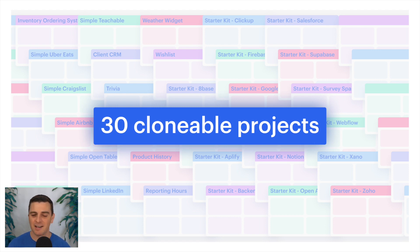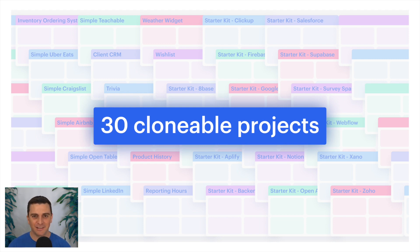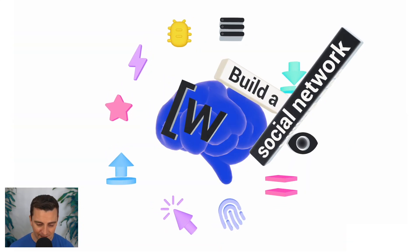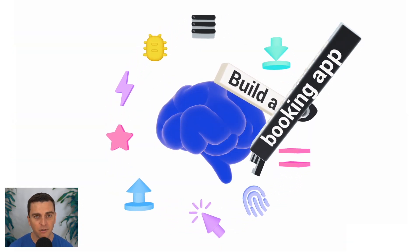You can duplicate any of these projects and start using Wizd immediately. We'll build a simple Uber Eats, a simple Craigslist, a simple Airbnb, a simple OpenTable, simple LinkedIn, simple Teachable, our own custom client CRM, trivia, link shortener, inventory ordering system, product history, reporting hours, weather widget, wishlist, and many more. We can use these projects as starters for client projects, personal projects, or just as a learning playground. The Intelligence Center is going to be a core focus of Wizd — we will grow our education library and resources to help develop the new wave of technical no-code developers.